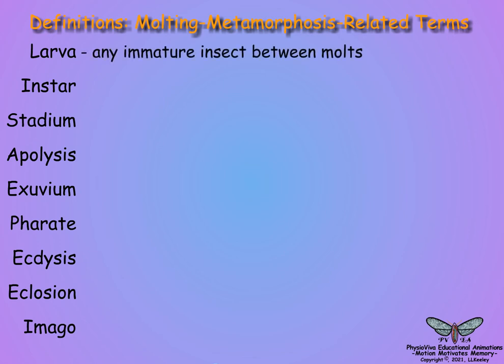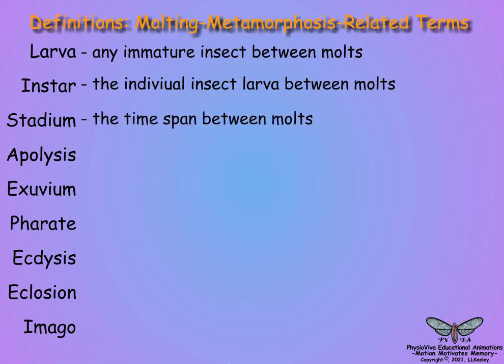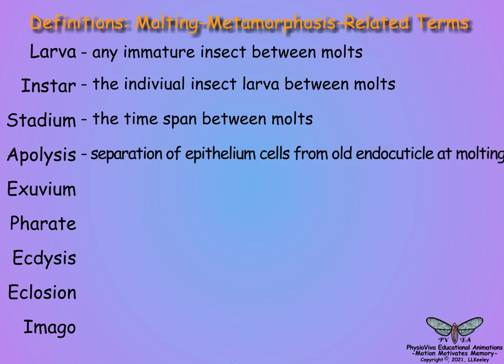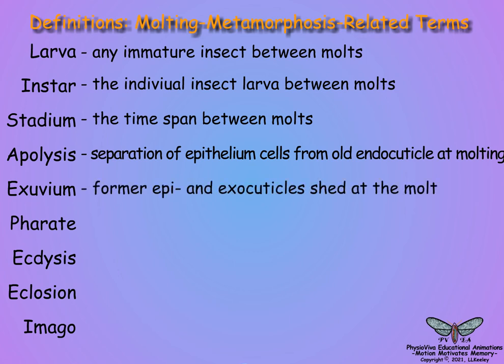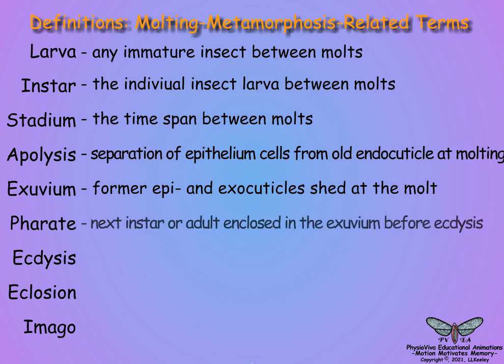Larva is any immature insect between molts. Instar refers to the individual immature insect larva between molts. Stadium refers to the time span between molts. Apolysis is the separation of the insect epithelium cells from the endocuticle at the start of molting. The exuvium is the former epi- and exocuticles shed at the molt. Pharate refers to the next instar individual following apolysis, but still surrounded with the exuvium prior to ecdysis.